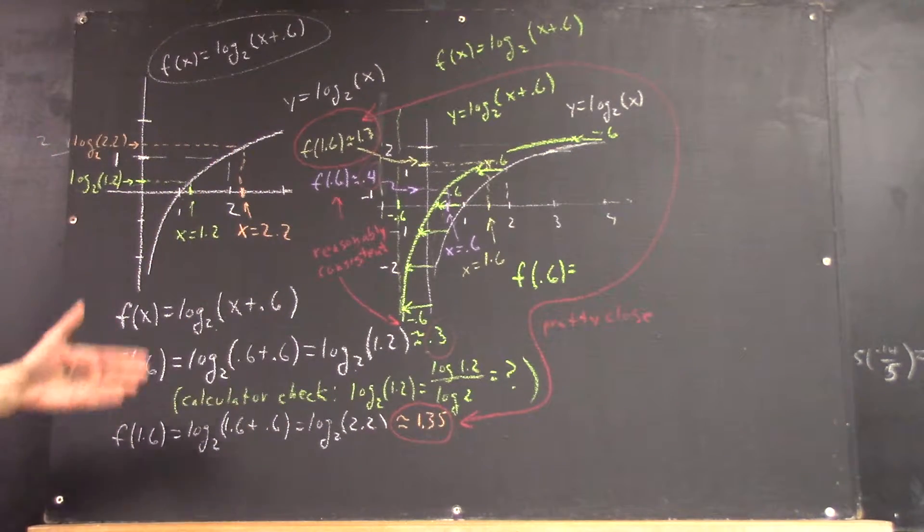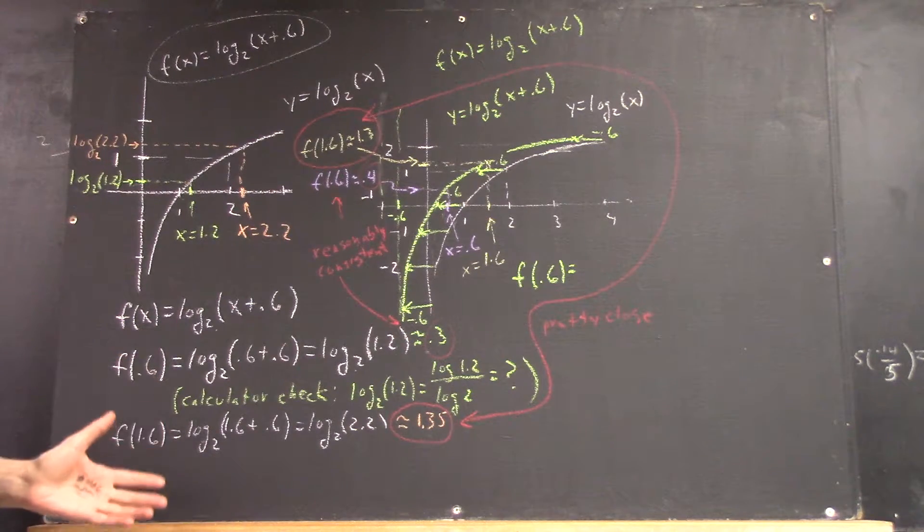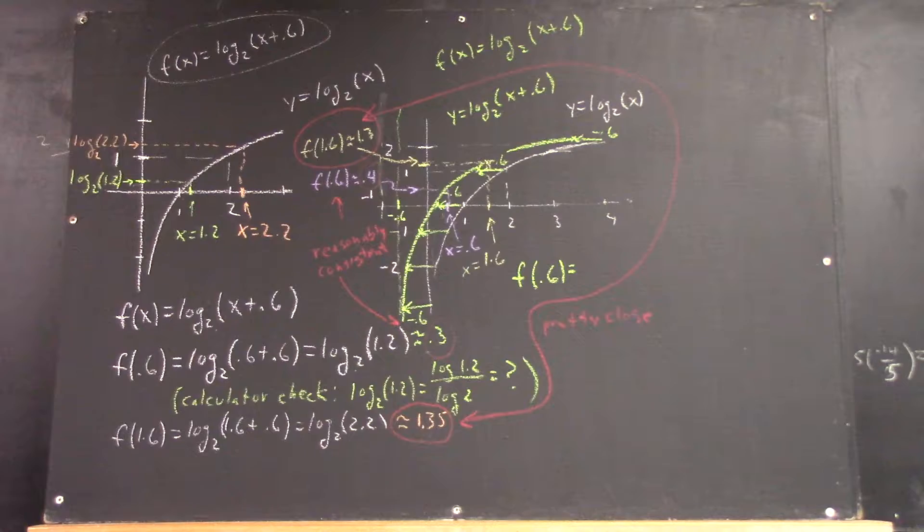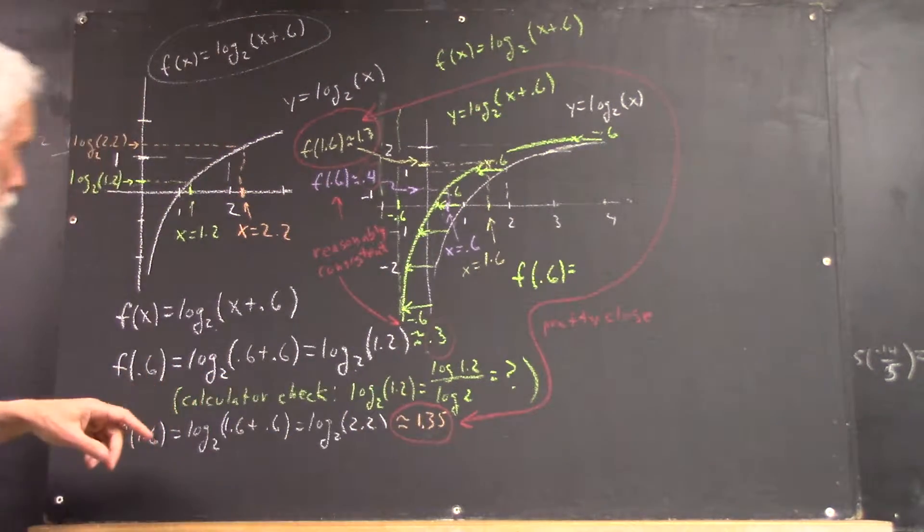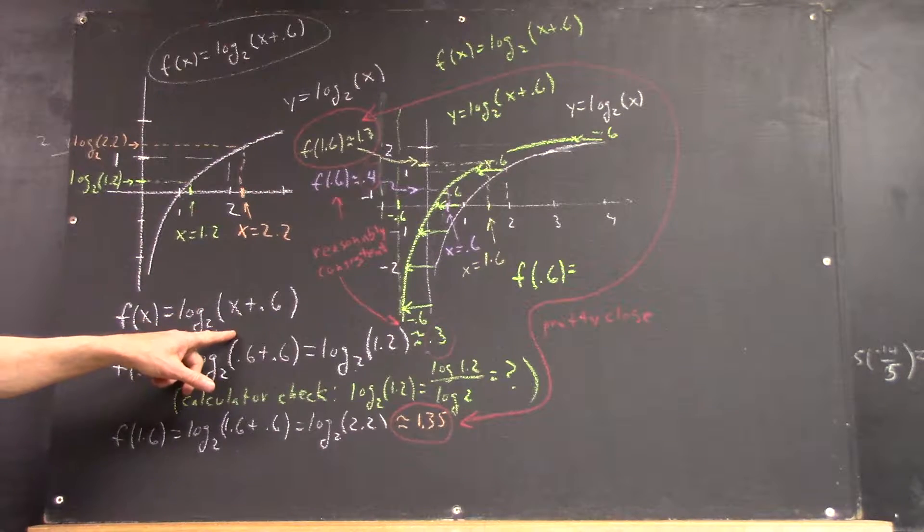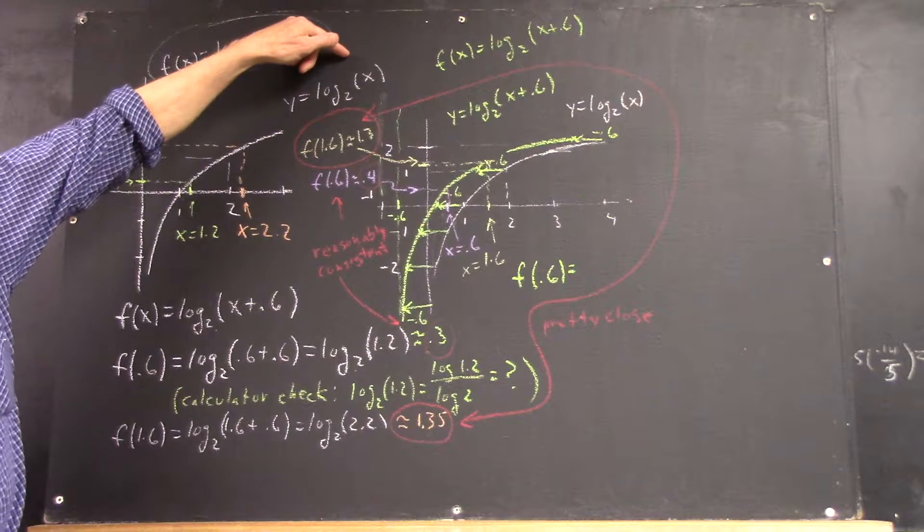And we're solving, we're basically evaluating a function based on our estimates from the graph. Now another thing I can do is, how does the graph of log base 2 of x plus 0.6 compare to the graph of log base 2 of x?